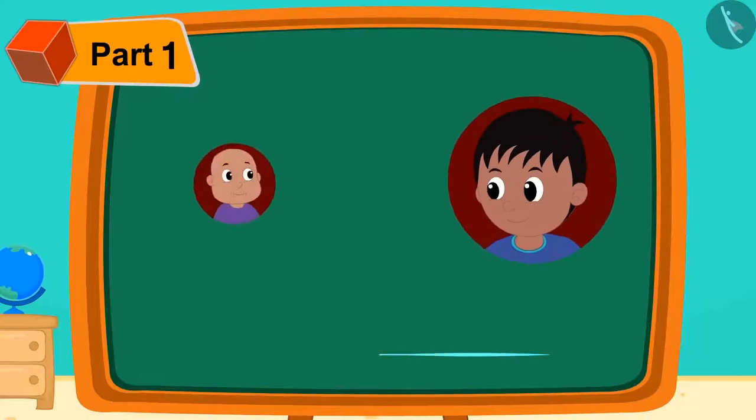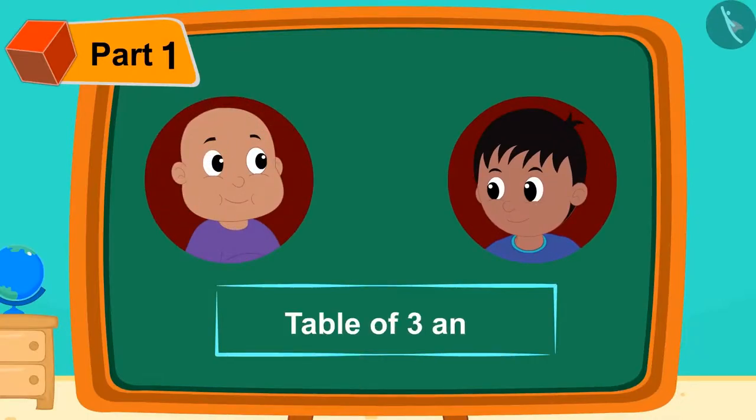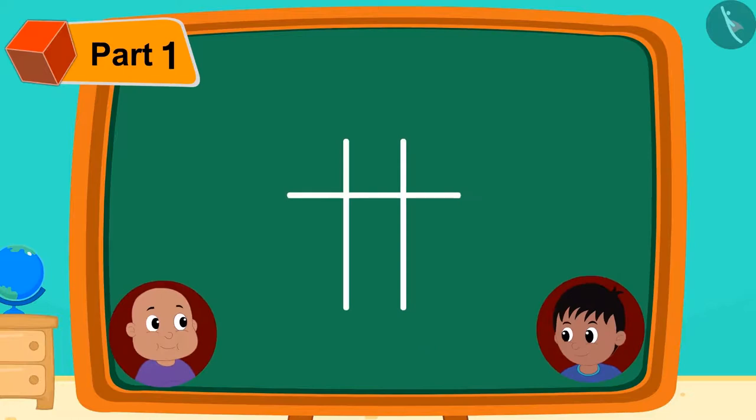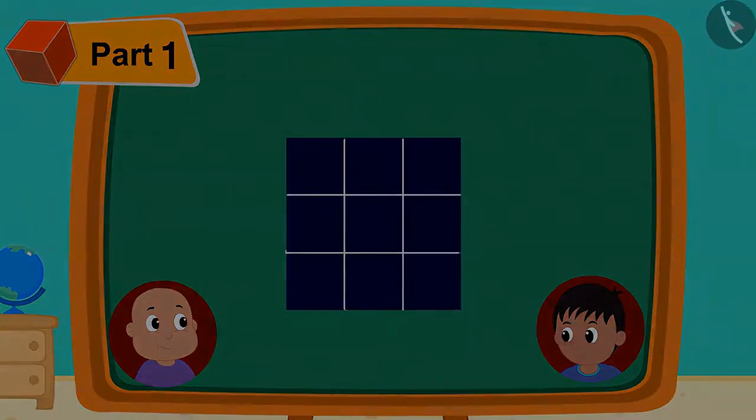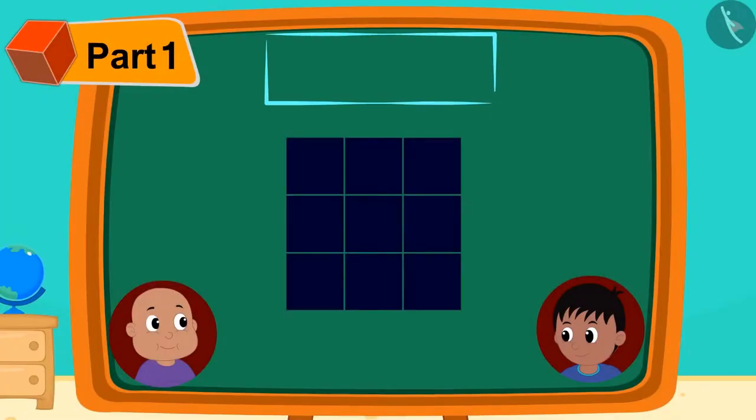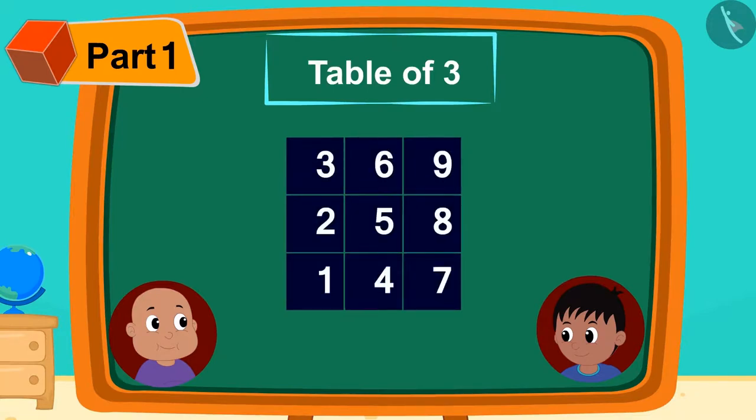Raju tells Bablu that he can also tell him an easy pattern to memorize the tables of 3 and 7. Kids, do you know the game of cross and 0? Raju first designed the game of cross and 0. He wrote the numbers from 1 to 9 in this pattern in the framework.